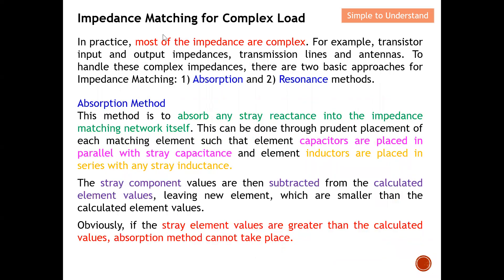Let's start by discussing how we can implement impedance matching. As mentioned, there are two methods: absorption and resonant. In reality, most impedances are complex — for example, a transistor's input and output impedance are complex. For transmission lines we often assume 50 ohm, but in the real world we cannot neglect the complex impedance. The same applies to antennas. To handle complex impedance, there are two basic approaches: absorption — the focus of this video — and resonant method.